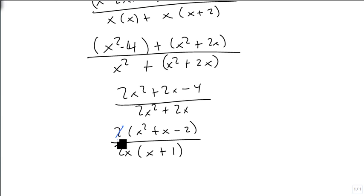The 2s then divide out, and our final answer, because there are factors, that factors to x plus 2, x minus 1, over x times x plus 1. And this is our final form, since everything has factored.